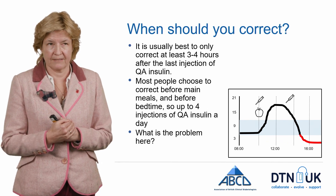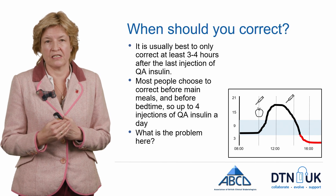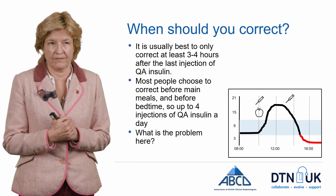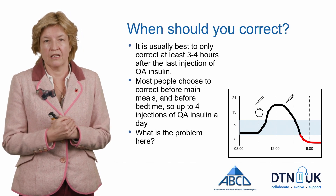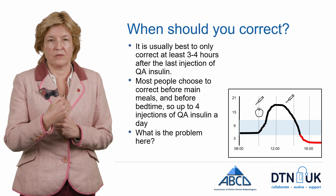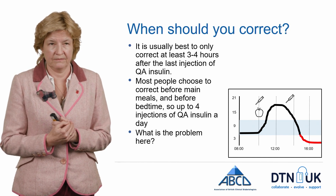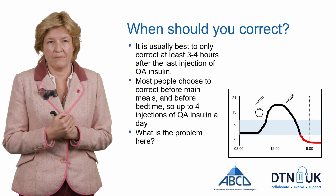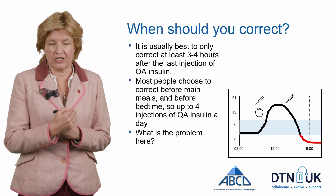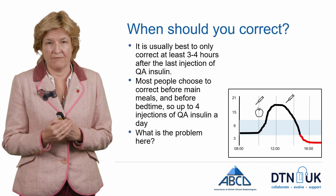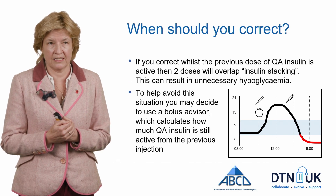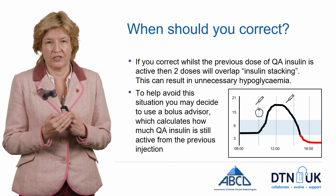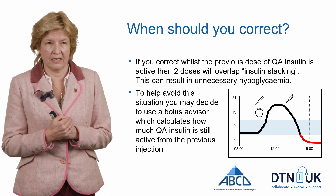So when should you correct? For people on pen therapy we suggest correcting three to four hours after the last injection of quick-acting insulin. Most people would do a check before a meal, see if it's high, and then add the correction on to the injection they're about to do for the meal. In this example the user gave an injection when the glucose was high, but the insulin from the first injection was still working, so the two combined together made the glucose drop too much and they became hypoglycemic. This phenomenon is called insulin stacking — if you stack injections too close together you can end up with hypoglycemia.